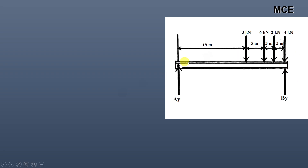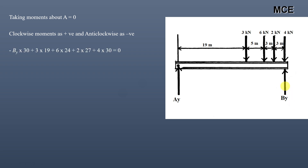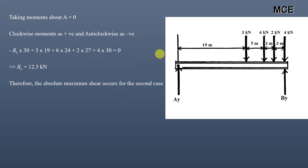For the second case, we place the 4 kN load just to the left of support B and find the vertical reaction at B. Taking moments about A equals zero, clockwise positive: −By × 30 + 3 × 19 + 6 × 24 + 2 × 27 + 4 × 30 = 0. From this we get By = 12.5 kN. Since 12.5 kN is greater than 12 kN, the absolute maximum shear occurs when the 4 kN load is placed just to the left of support B, giving an absolute maximum shear of 12.5 kN.